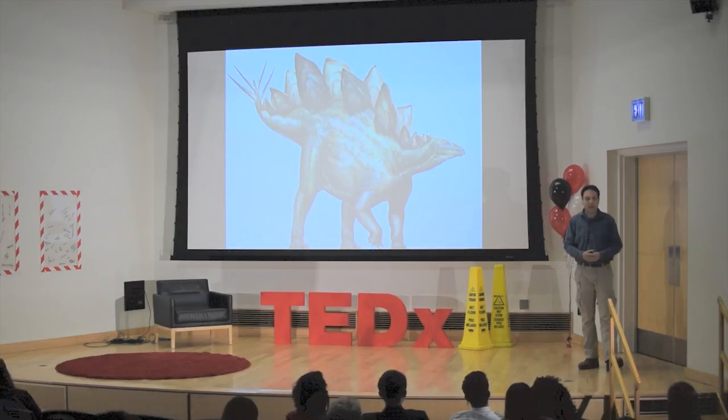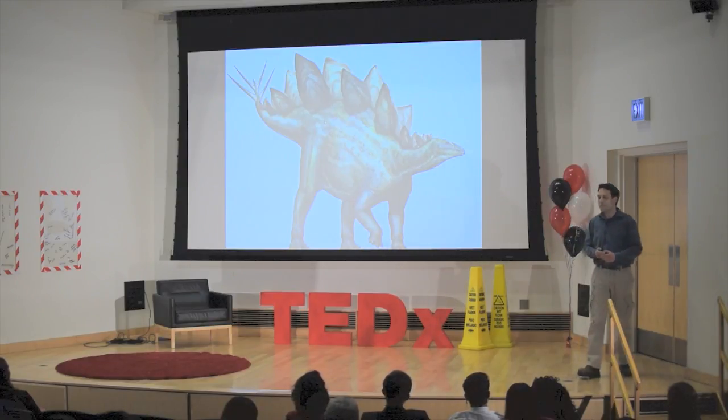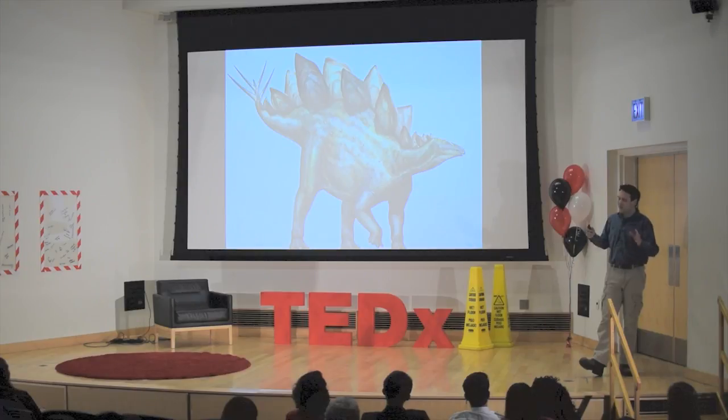This dinosaur is an armored animal. It's called Stegosaurus. It has giant bony plates on its back and spikes on its tail. Now, the three dinosaurs I just showed you look very different. They are very different. But they share one very important thing in common.